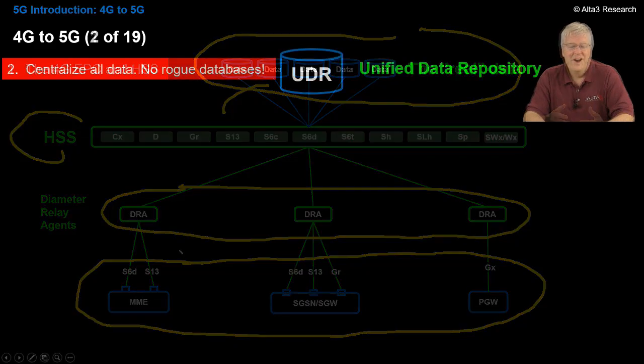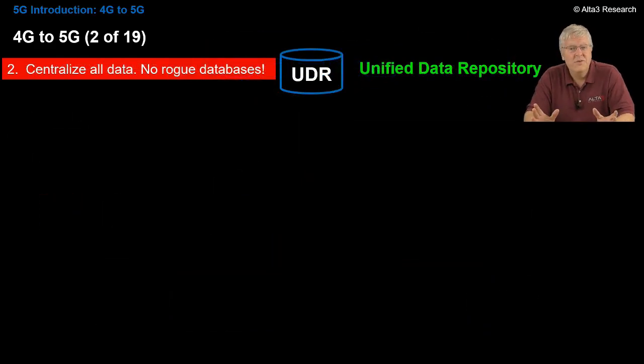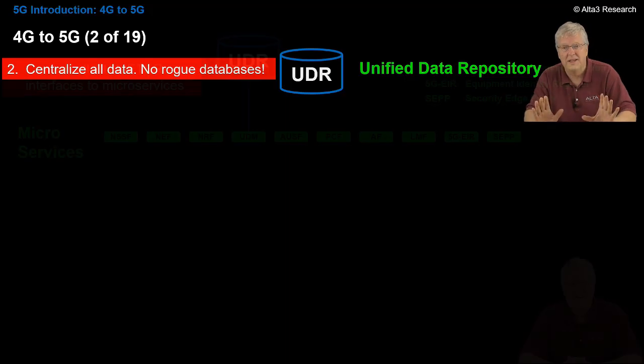Let's get started. Our first step is to unify all of that data. So we're going to actually come up ideally with the perfect data structure to run our network. This means no rogue databases. Instead we're going to have the unified data repository. Think if this is the data that would have been behind the HSS. All neat and organized. Everything in one place.